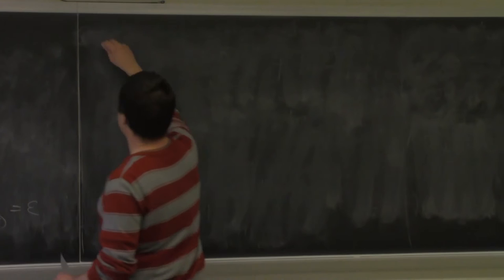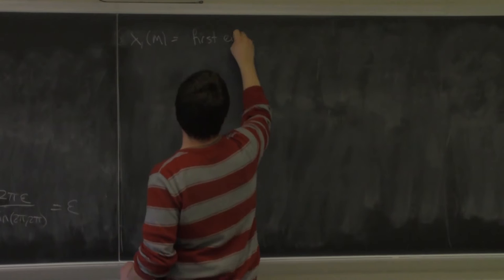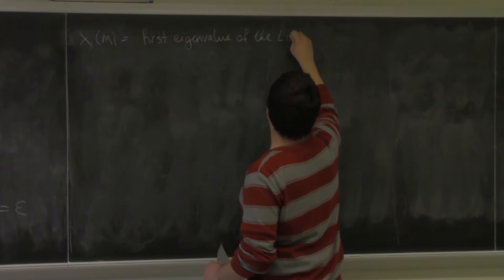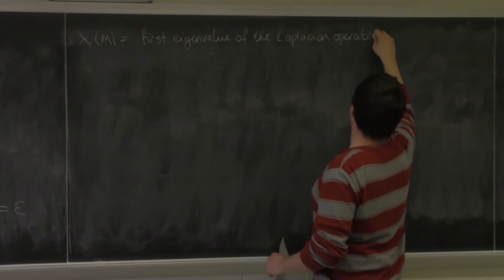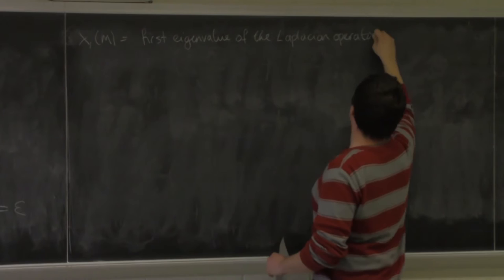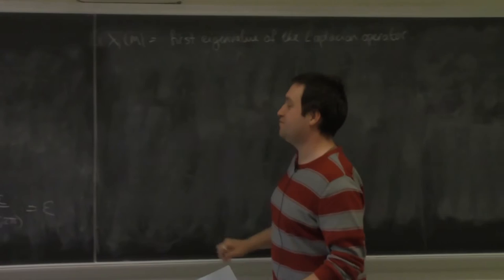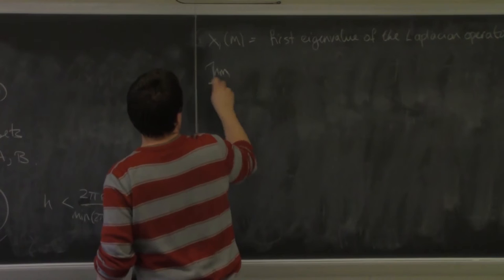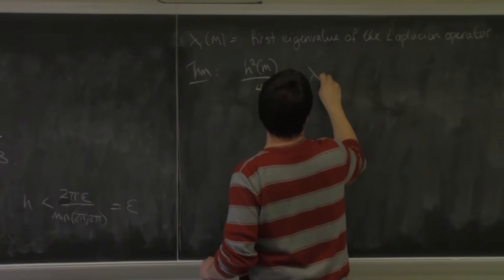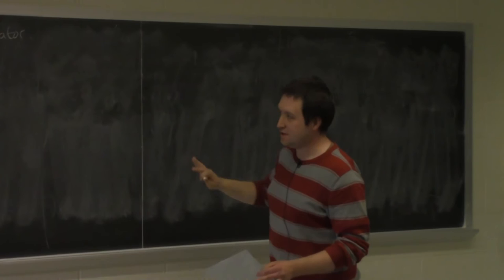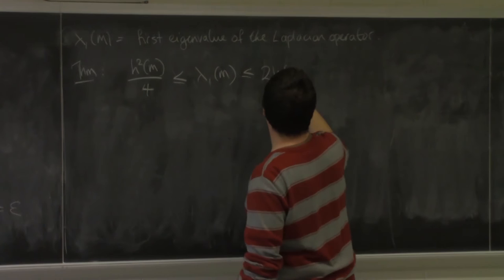Lambda_1(M) is going to be the first eigenvalue of the Laplacian. I'm going to do my best to not make any assertions about lambda_1, because I've made that mistake before. The point is, lambda_1 and h are very much intertwined via these inequalities. The theorem is that you can sandwich lambda_1 between two bounds that depend on the geometry of the surface.